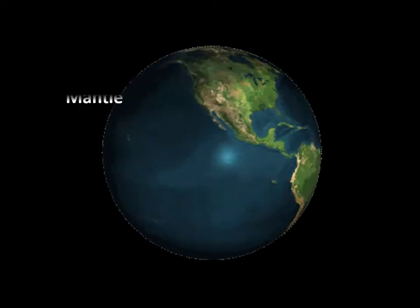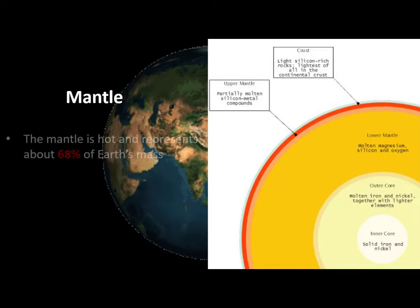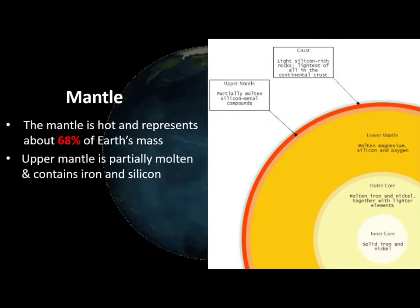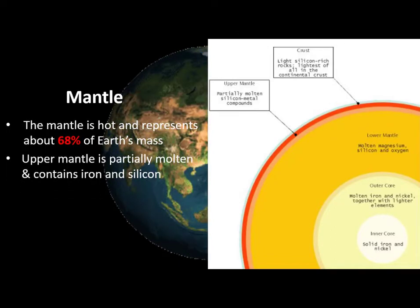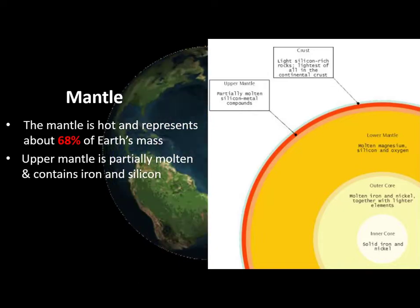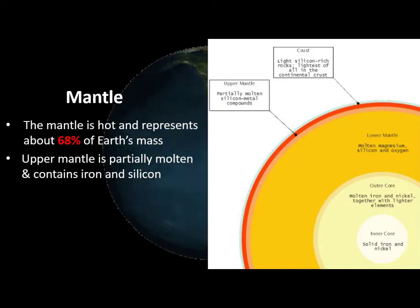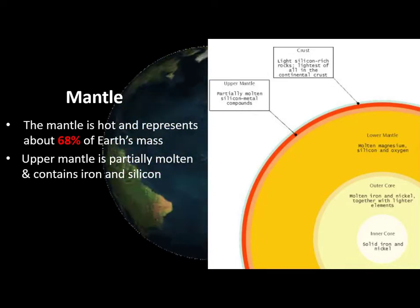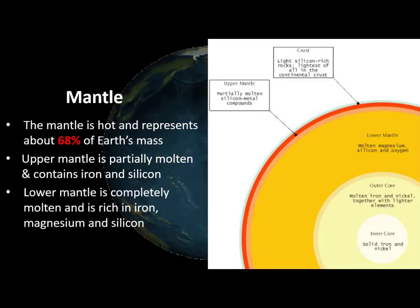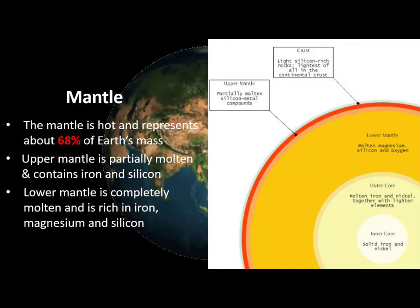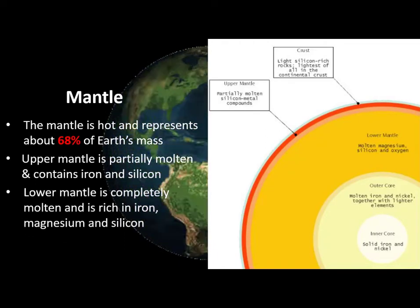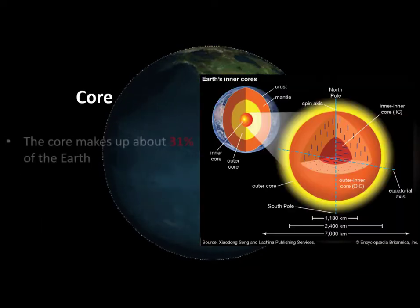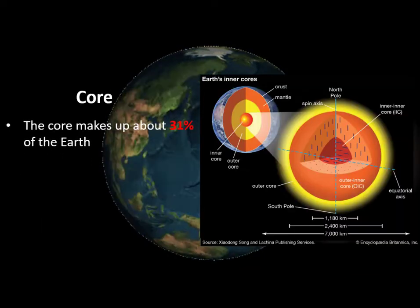The mantle is hot and represents about 68 percent of Earth's mass. The upper mantle is partially molten and contains iron and silicon, whereas the lower mantle is completely molten and is rich in iron, magnesium, and silicon. The core makes up about 31 percent of the Earth.